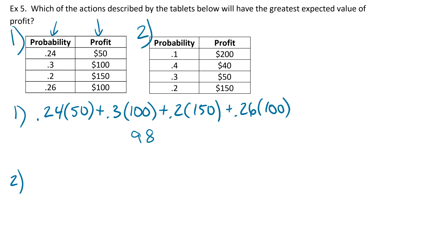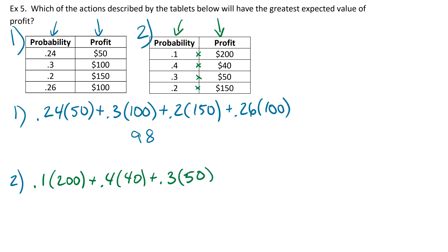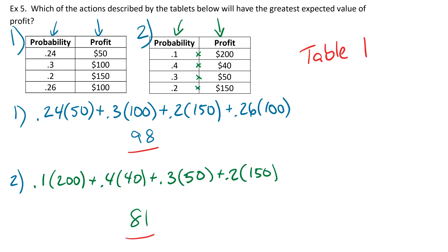For game 2, we again multiply each probability by its value and add them up: 0.1 times 200, plus 0.4 times 40, plus 0.3 times 50, plus 0.2 times 150. Add all of those up and you should get 81. So which table has the greatest expected value? That would be table 1, because 98 is greater than 81. If you had a choice between these two games you should definitely choose the first one. And that is it for expected value.